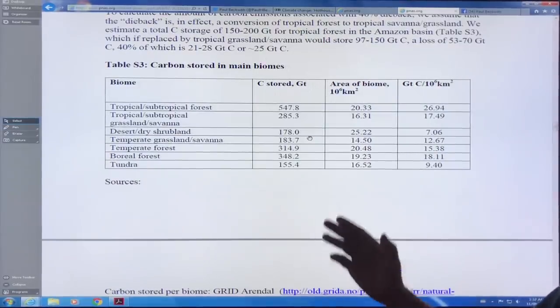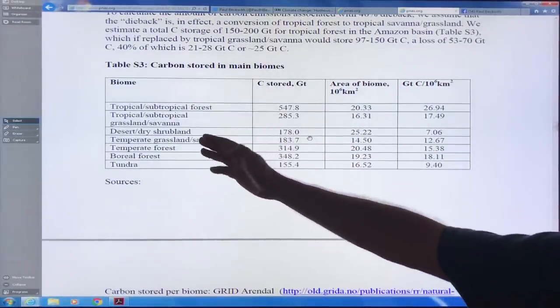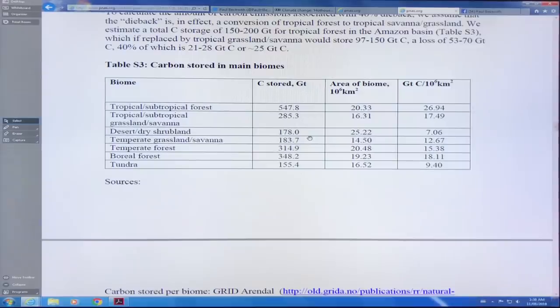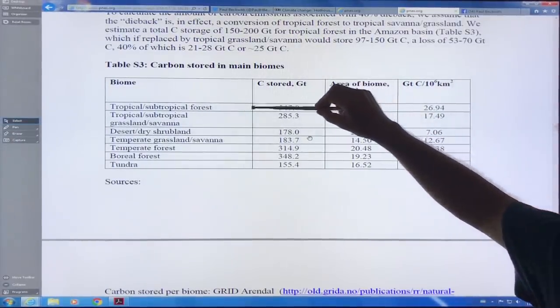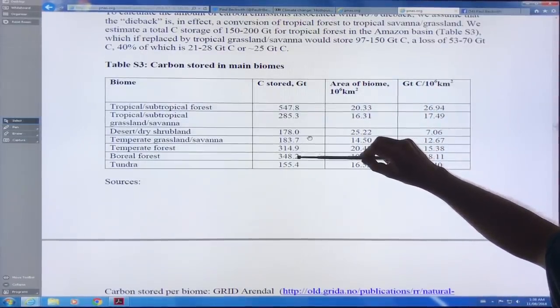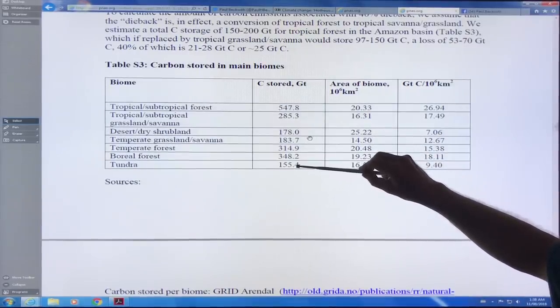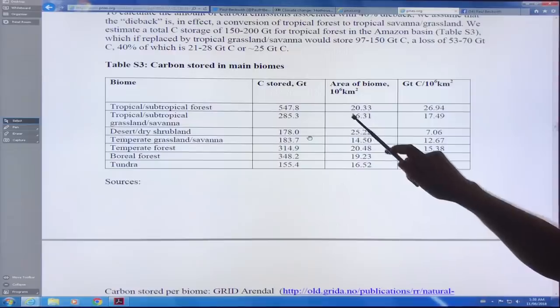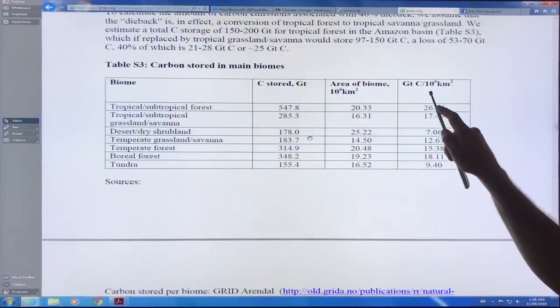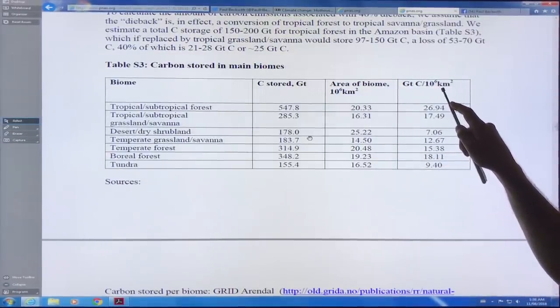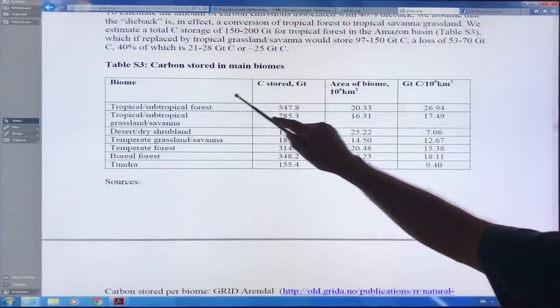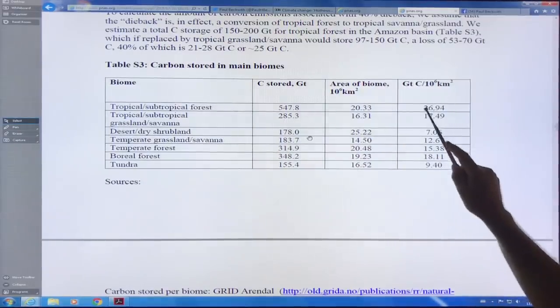This is an idea of the carbon that is stored in the different biomes: tropical, subtropical forests, savannas, deserts, temperate forests. Lots of carbon in the tropical, subtropical forests, the rainforest. Lots of carbon in the boreal forest. This is temperate sort of mid-latitude forest. Lots of carbon in the tundra in all of the different biomes. This is the area of the biomes. If you just divide the carbon by the area, you get the carbon gigatons of carbon per million square kilometers. You can see basically the tropical, subtropical forests, how high they are.